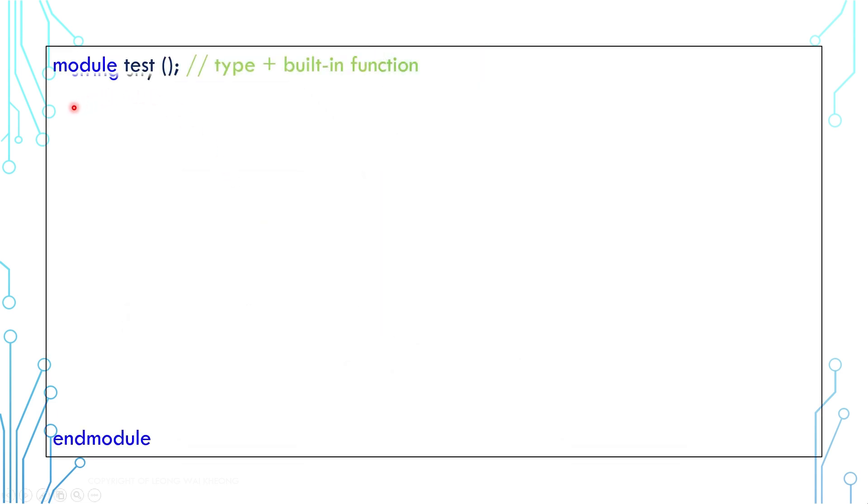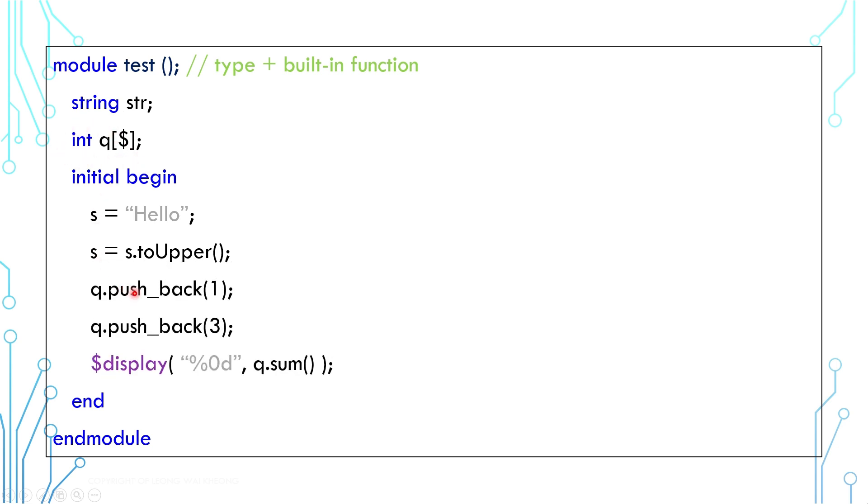Take a look at this basic data type. This is a string. This is how we can set a string value. And toUpper is a built-in function for string. Similarly, this is a queue. It has several functions like pushback and some.